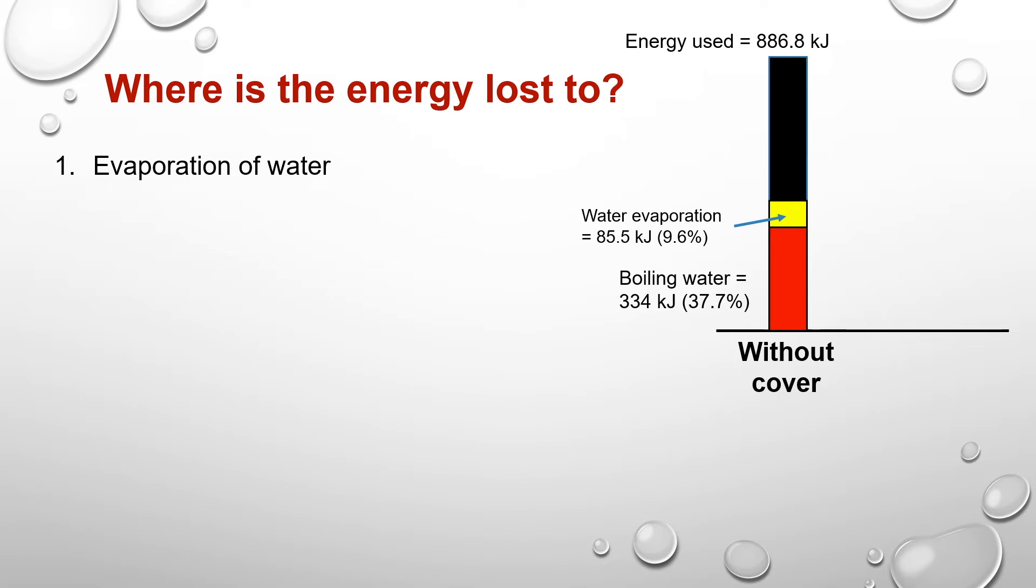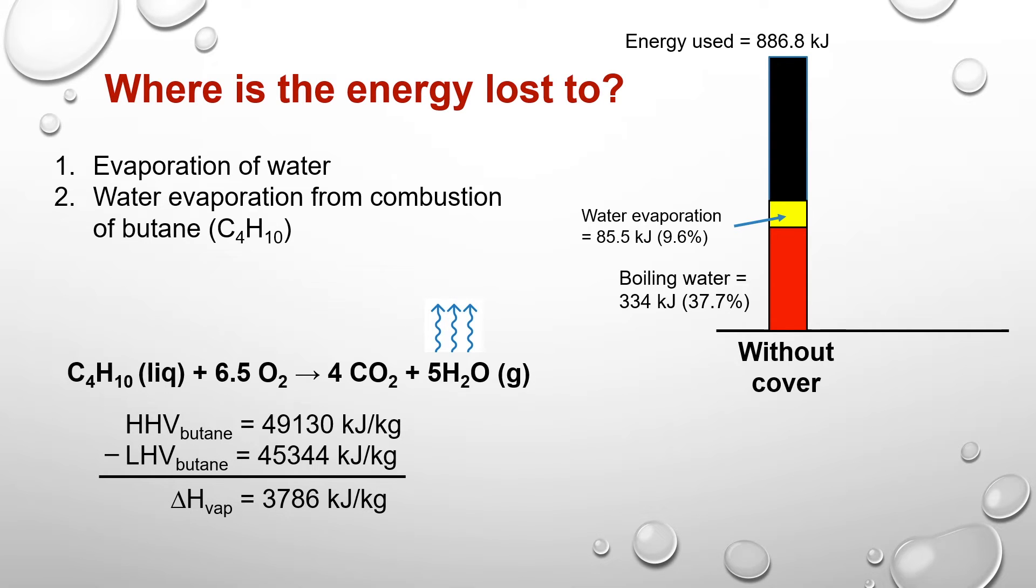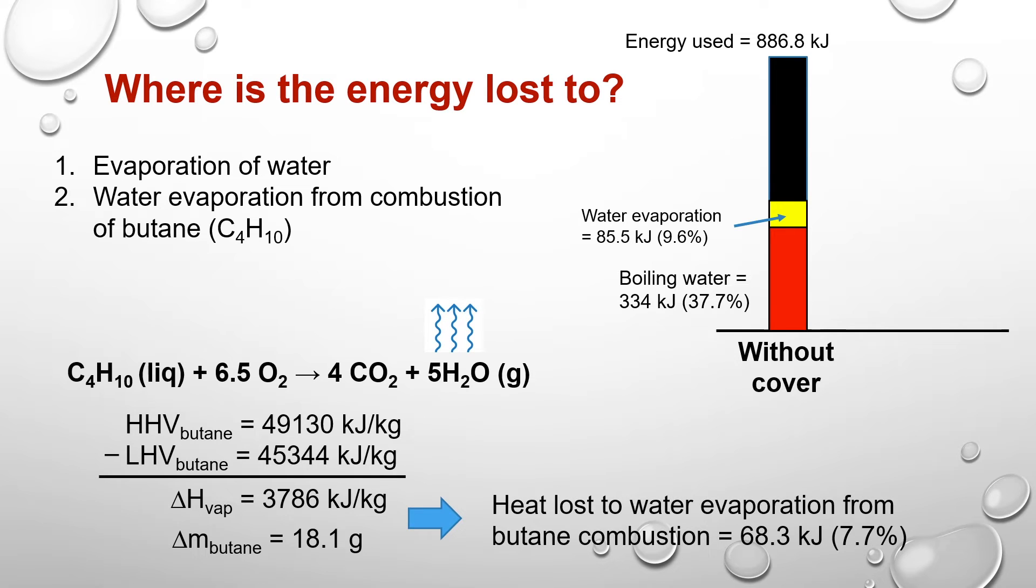A second source of energy loss comes from the combustion process. During combustion of butane, water is generated. The higher heating value assumes that water remains liquid after combustion. In reality, this water is also evaporated, which takes away heat energy. The energy loss is the difference between the higher heating value and the lower heating value of butane times the mass of the butane, which amounts to about 68.3 kJ. That is about 7.7% of the input energy.